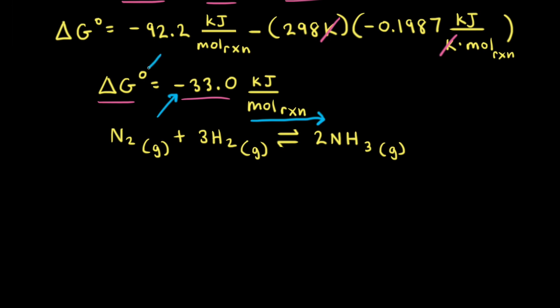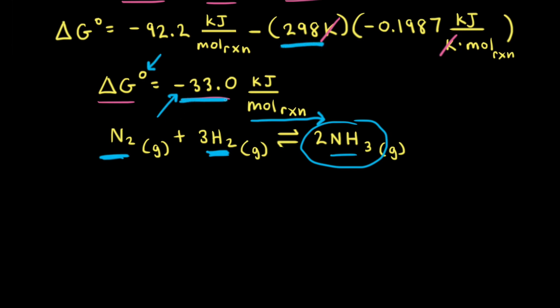The superscript zero means that both the reactants and products are in their standard states. So what our calculation tells us is: if we had a mixture of nitrogen, hydrogen, and ammonia gas at 25 degrees Celsius, and all three gases had a partial pressure of one atmosphere, the reaction is thermodynamically favorable in the forward direction — meaning nitrogen gas and hydrogen gas would come together to synthesize more ammonia. So at 298 Kelvin, ΔG⁰ for this reaction is negative.